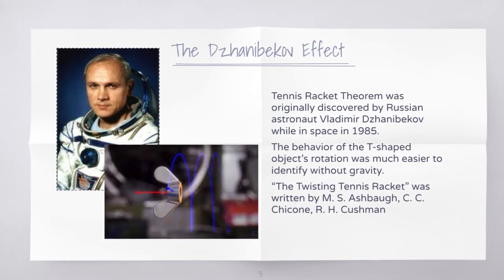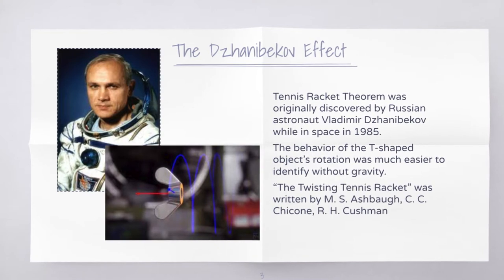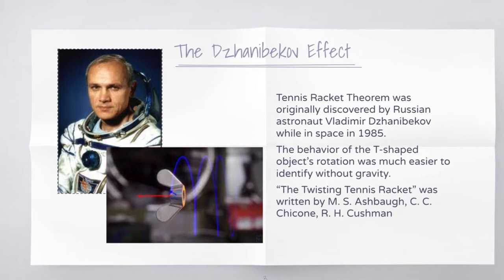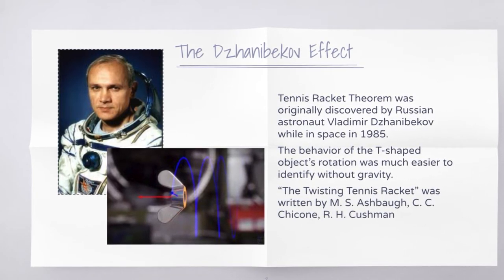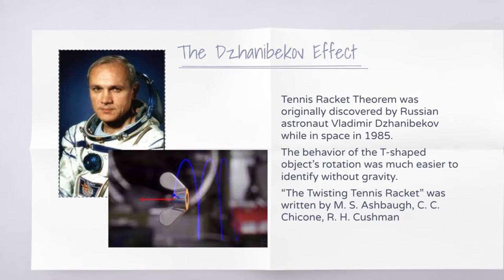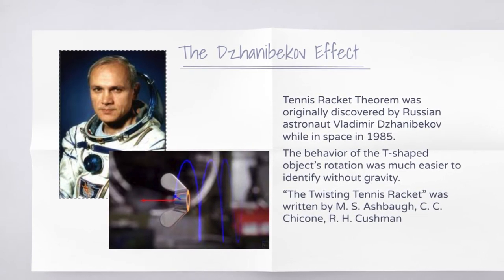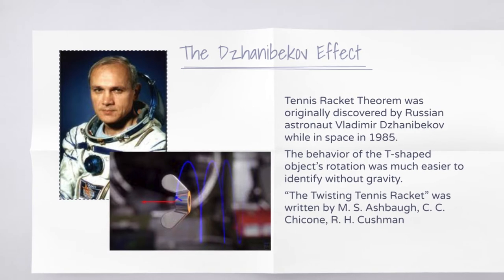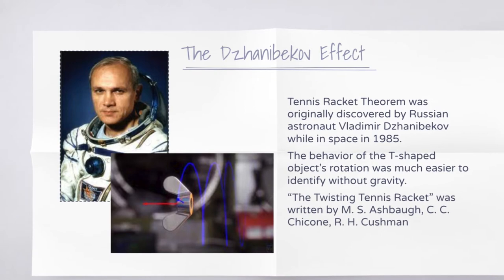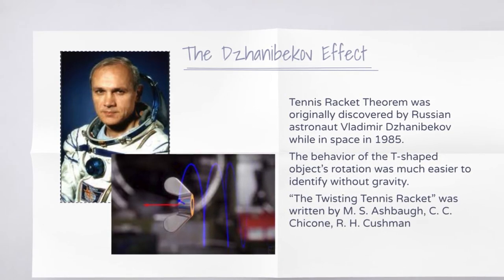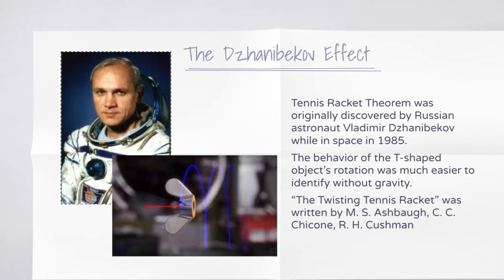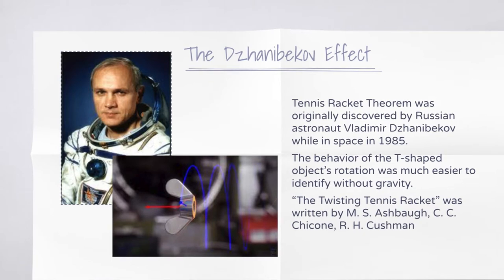During his trip, Janabekov and Viktor Savink were sent to save a spacecraft that had shut down and was beginning to drift out of orbit. Supplies that they had brought from Earth were locked down with wingnuts, which also have three unique axes of rotation. When Janabekov unscrewed the wingnut, he noticed the interesting behavior of the intermediate axis becoming unstable and then flipping 180 degrees. After discovering the theorem, Janabekov kept it secret for years, and then later, a team of mathematicians independently discovered the behavior with a tennis racket and published the twisting tennis racket years later. Because of this complex background, the intermediate axis theorem goes by both the Janabekov effect and tennis racket theorem.